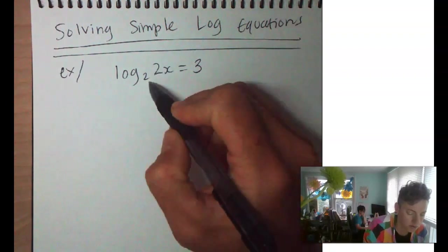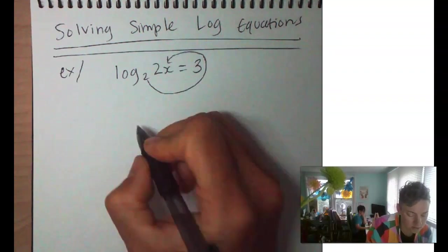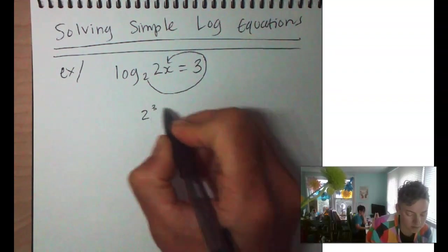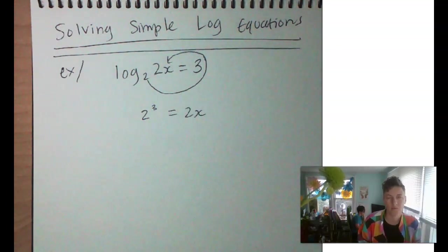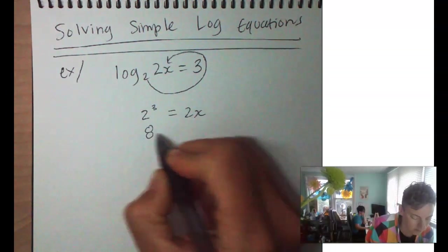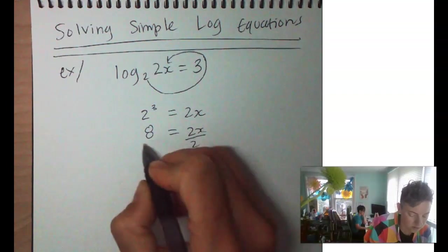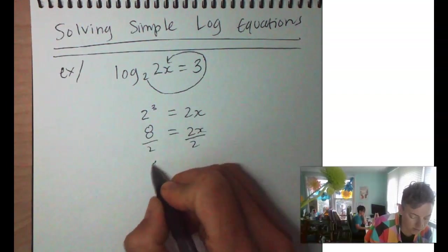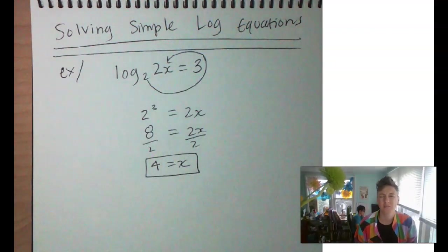So 2 to the third power is going to equal 2x. 2 to the third power equals 2x. Well, we know what 2 to the third is. That's just the best number in the world. That's just 8. And then we definitely know how to divide by 2, so x equals 4. That was so easy. Bunch of geniuses over here. Bunch of geniuses.